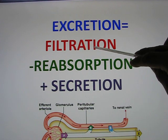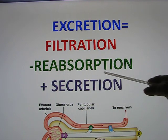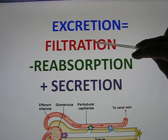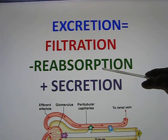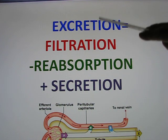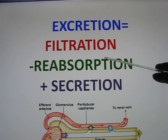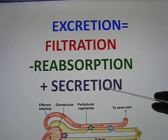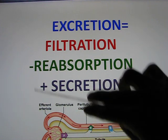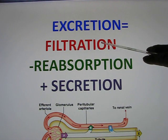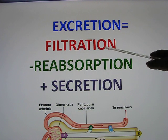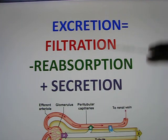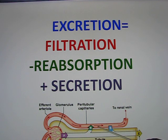Even though glucose will be filtered in, the reabsorption rate is 100%. So you filter in 20 glucose, you take back 20 glucose, and you still get zero excretion. Excretion equals filtration minus reabsorption plus secretion — like penicillin. You filter in 20 penicillin and end up with 40, because you secrete 20 more. So it's this equation: how much you filtered in, subtract how much is taken back, plus how much you secrete, equals the excretion rate.